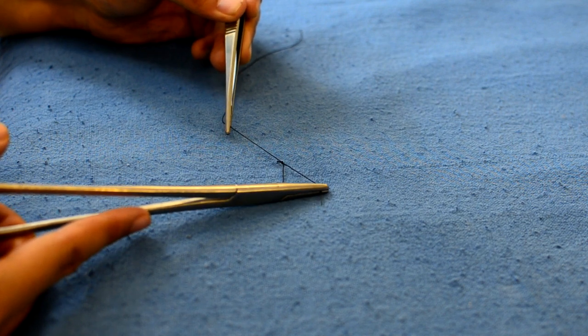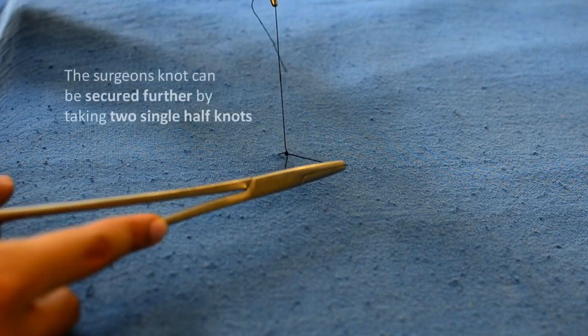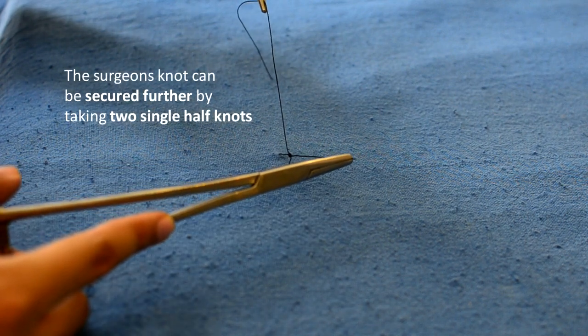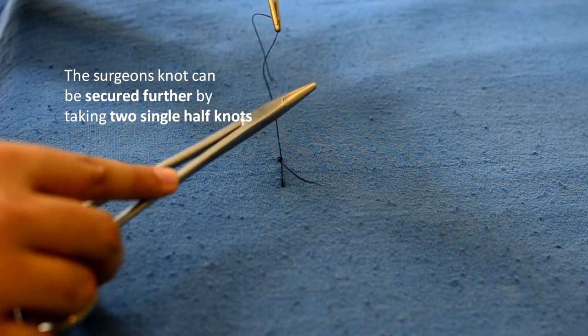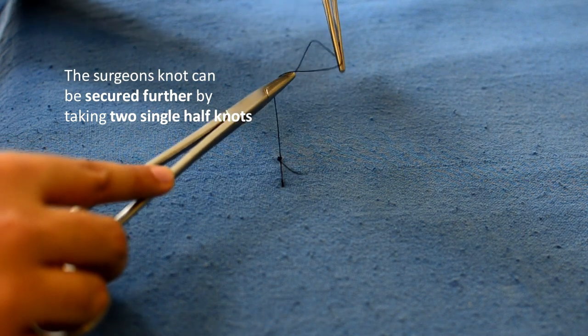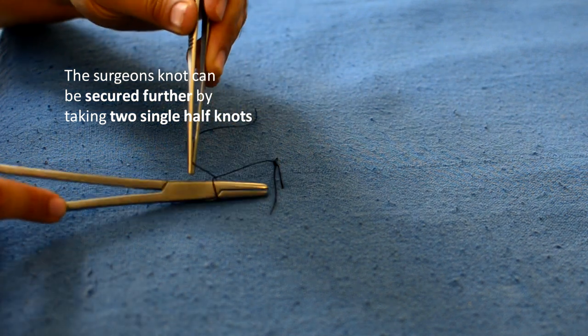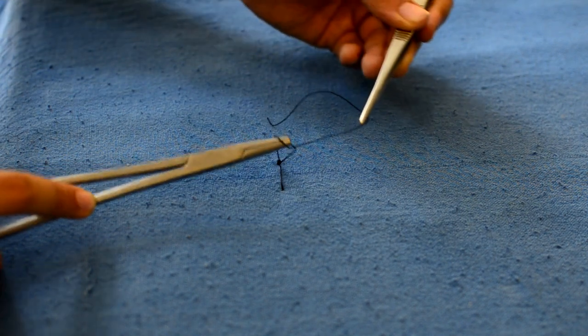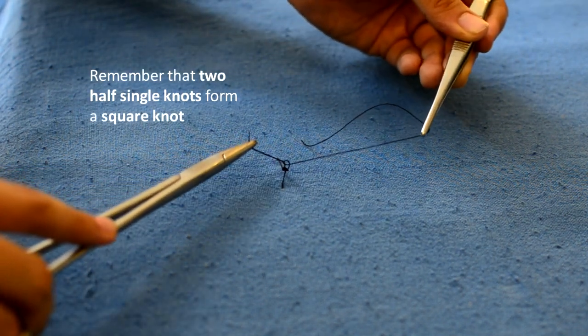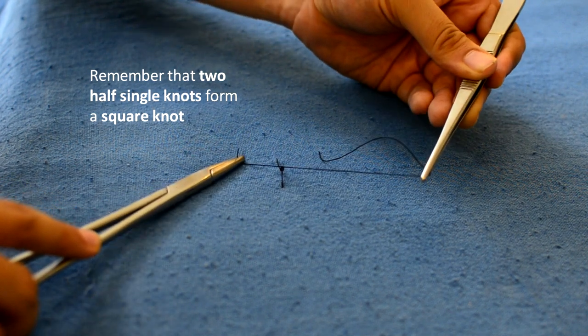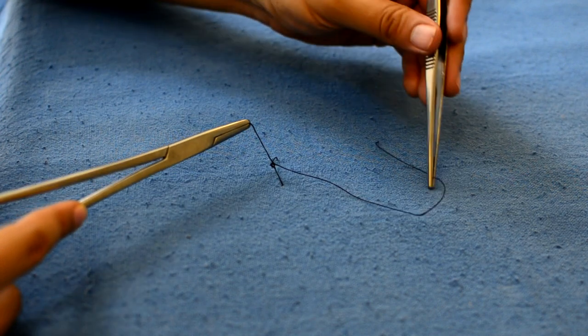This surgeon's knot can then be further secured by taking two half knots. Again here you have to recognize the V and the long and the short end of the suture. Remember that two single half knots will form a square knot whereas a double half knot in combination with a single half knot will form a surgeon's knot.